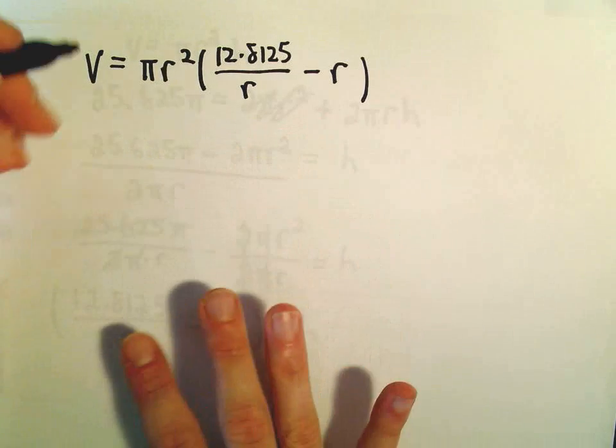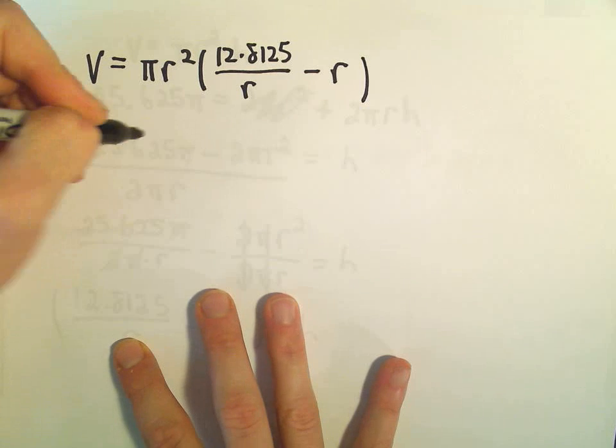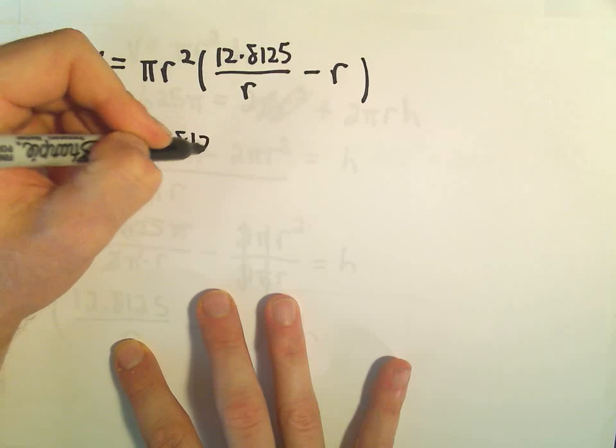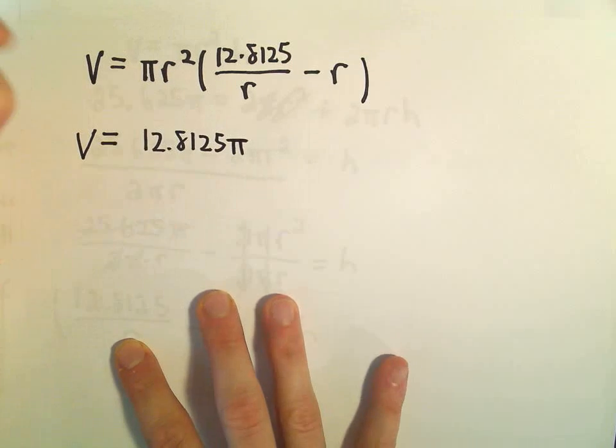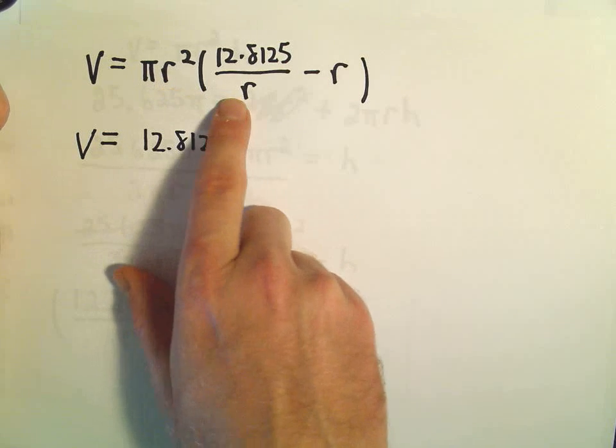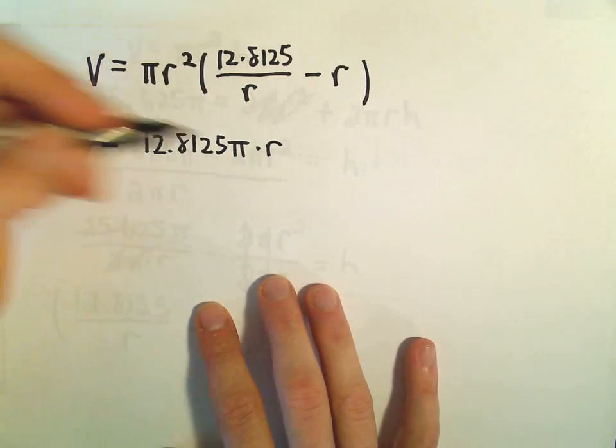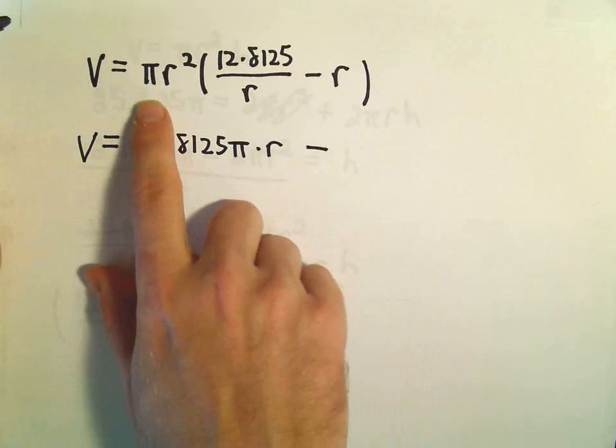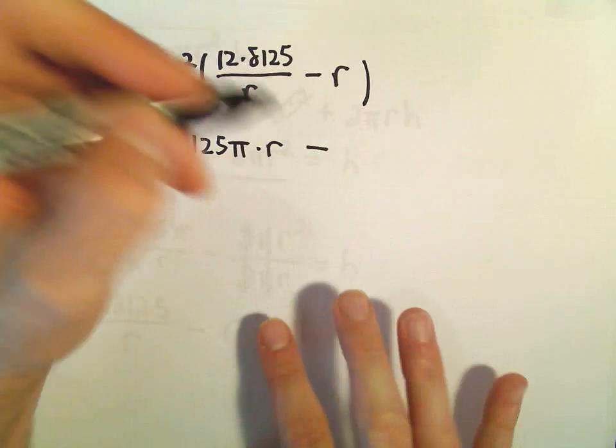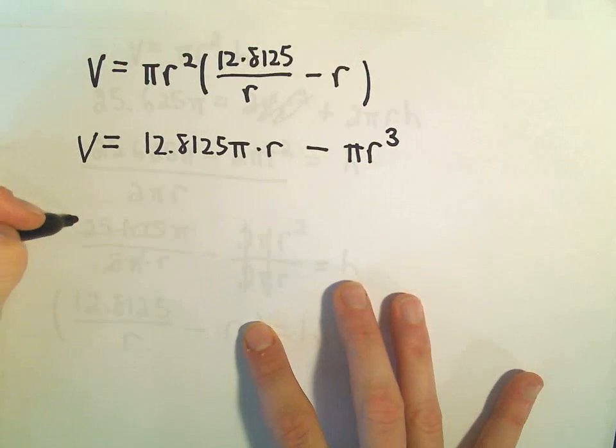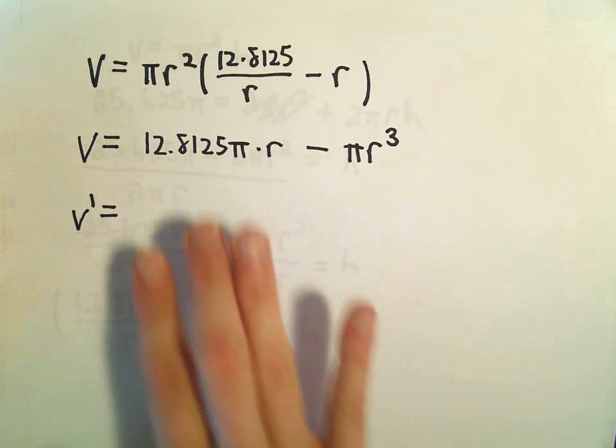But first thing I'm going to do is distribute. So we would get 12.8125 times π. Notice we would have R² over R. So one of the R's would just cancel. And then when we distribute again, we'll have πR² times R, which will be π times R³. And now we can take the derivative without too much trouble.